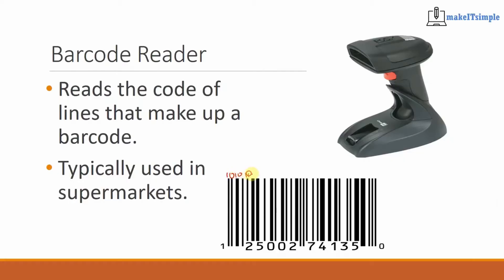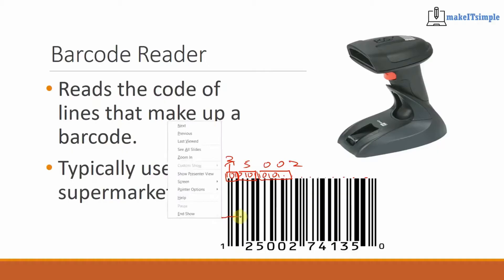A barcode has a bunch of bits — one, zero, one, zero, one, zero — all the way down. There are about 72 of them, grouped into different categories, and each group converts to a number, so it'll convert to something like 25002.